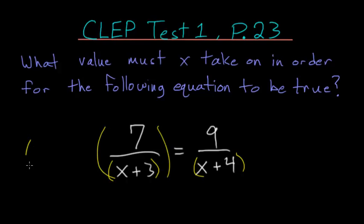So if I multiply everything by (x+3) times (x+4), I can get rid of both denominators at the same time.